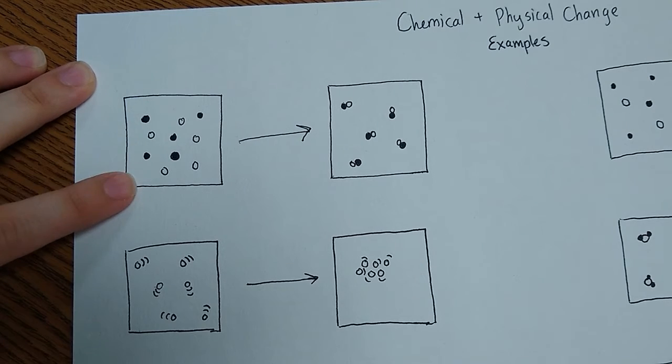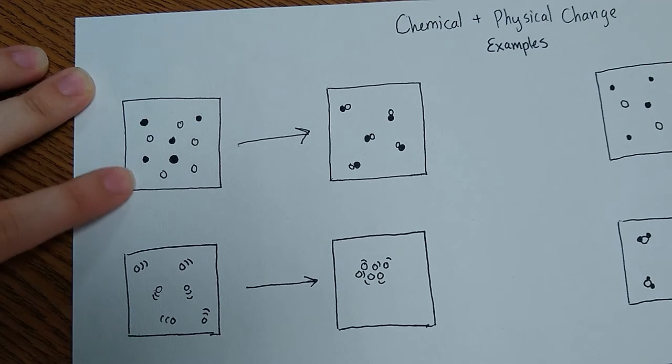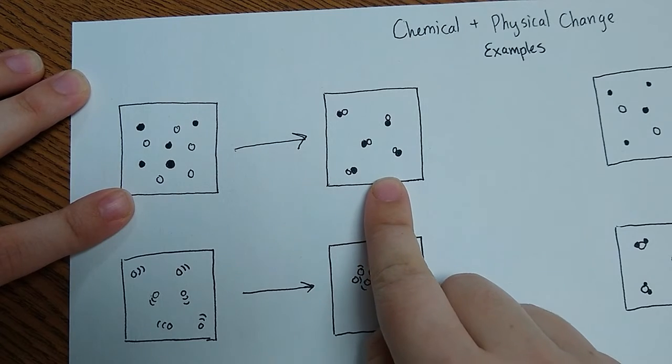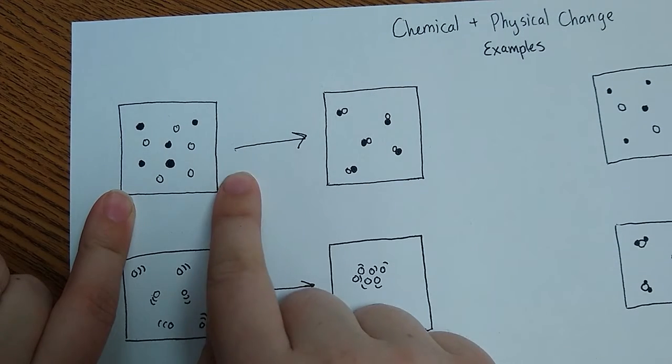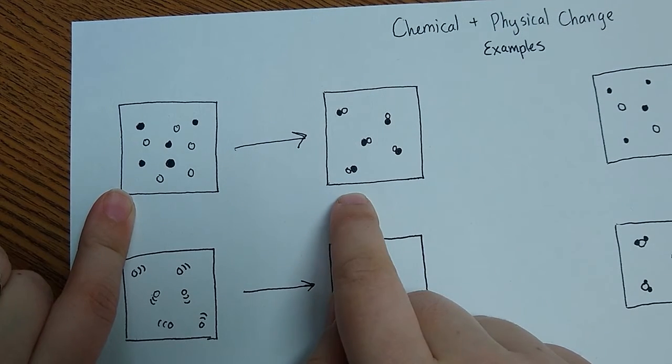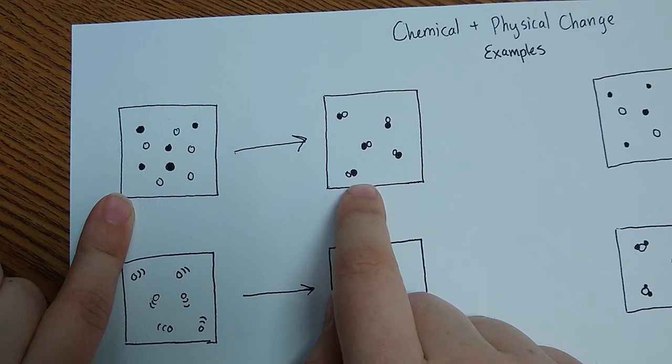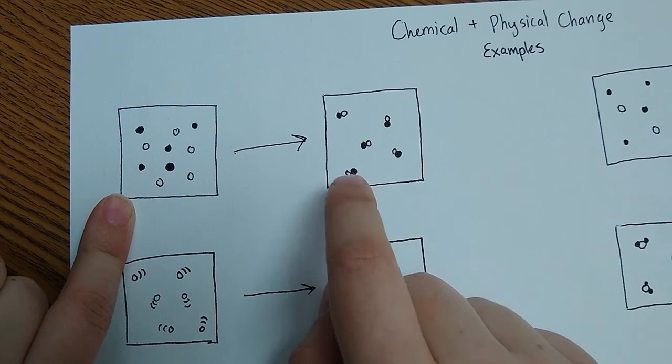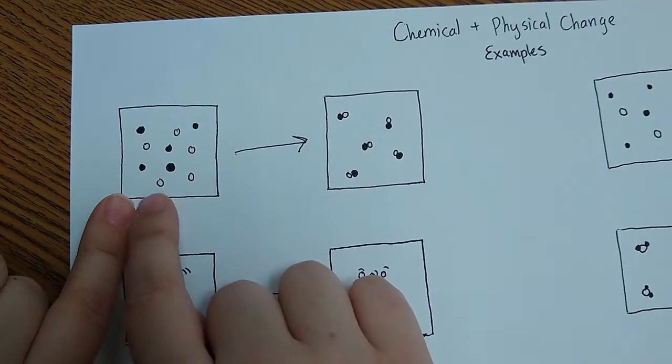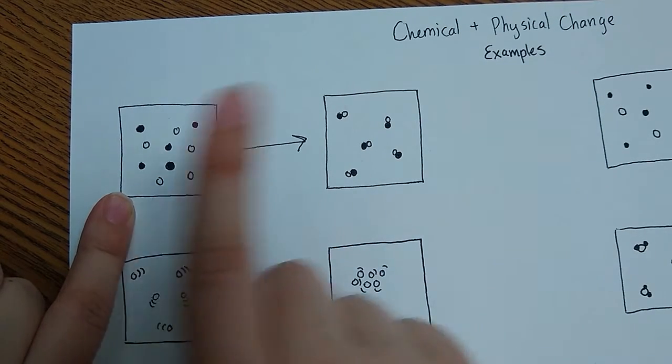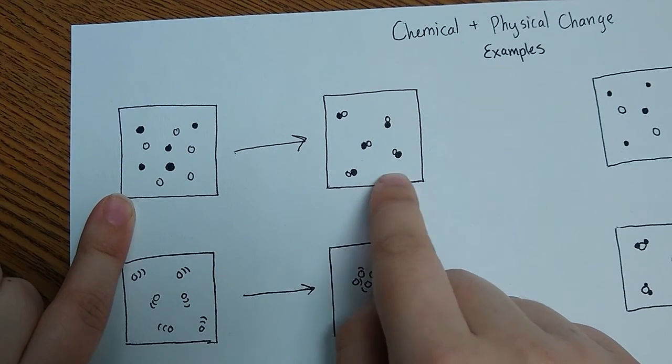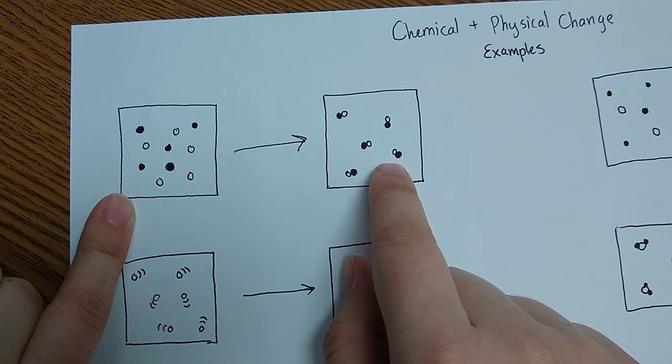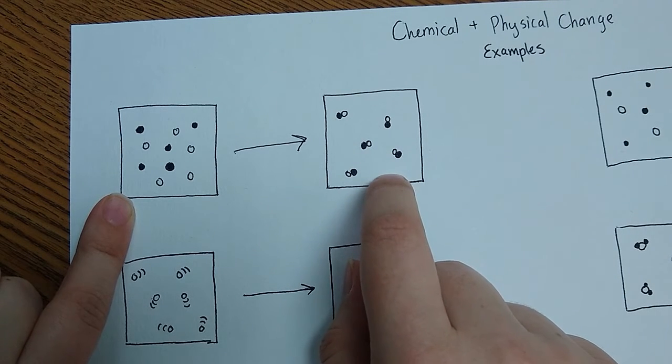So over here we have two different types of atoms, some that I've just colored in black, some that I have left as white, and we have this situation over here. So something happens, this is the change, and now they look like this. Well, what really keys in to the fact that this is a chemical change is now these things are bonded together. They're all very different, separate here, but over here they're very specifically one to one, one white atom with one black atom, and they are stuck together.